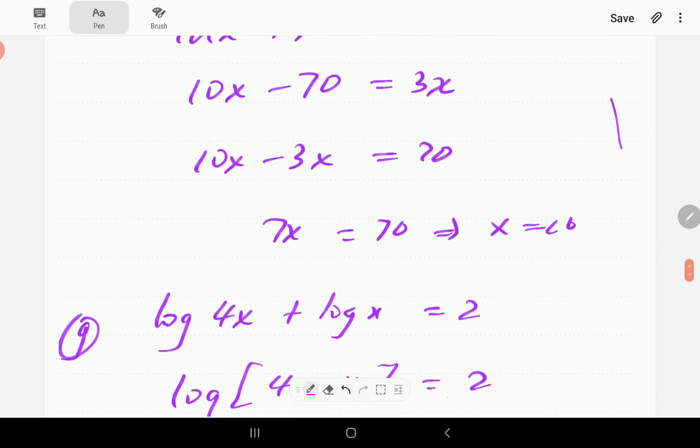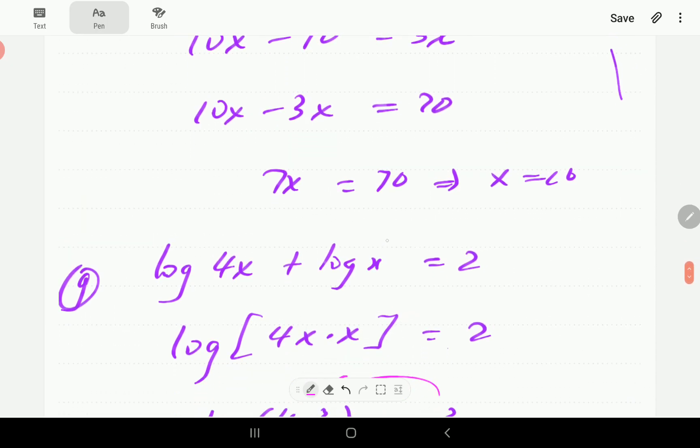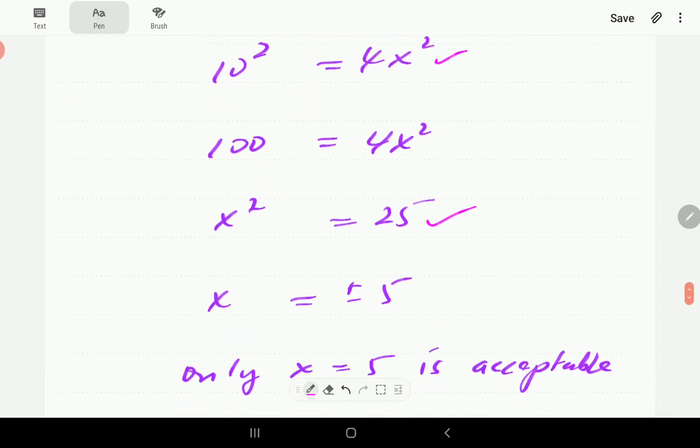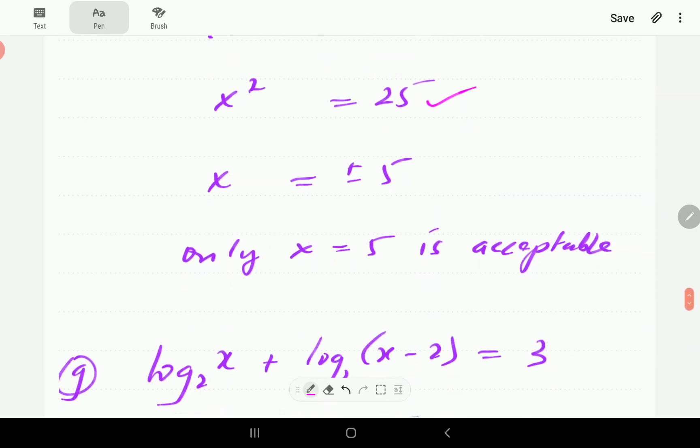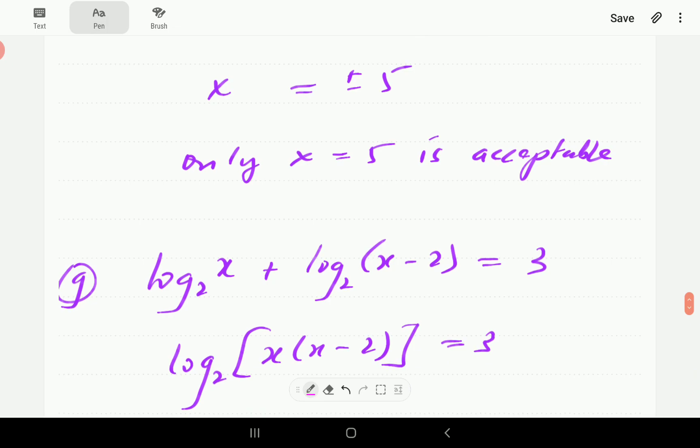However, you're going to notice that when x is negative 5, then neither of these is going to make sense, because we don't do logs of negatives. So x equals to 5 only is acceptable.